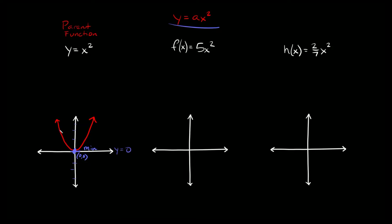If your parabola opens downward, then your vertex is going to be at the very top — again, kind of where the two sides meet. The vertex would be at a maximum spot, and you would just use the y-axis to say where it is. Here it looks like it's at about negative one, so we could say that the maximum spot is at y is equal to negative one.